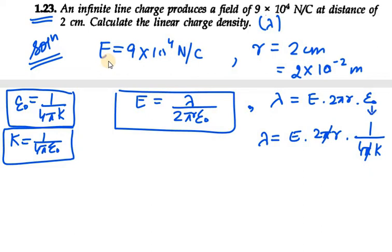So lambda we get is 2rE/(4k). Now we can even reduce 2 and 4 here, so it will be 1/2. So lambda equals r...